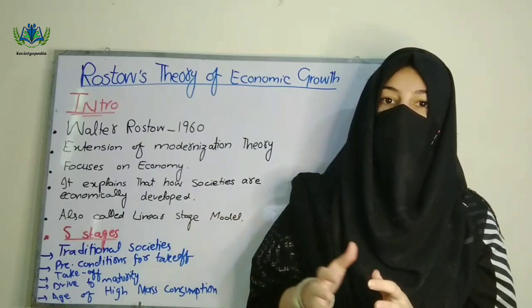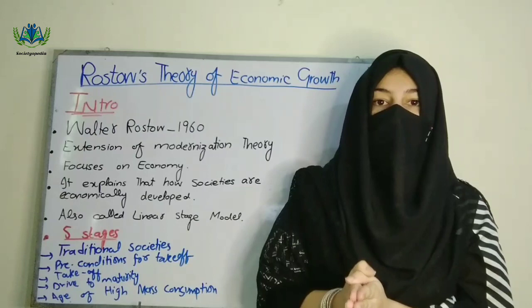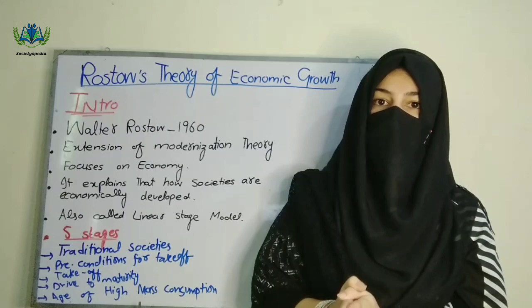The first stage is traditional society, second is preconditions for take-off, third is take-off, fourth is drive to maturity, and fifth is age of high mass consumption. According to Rostow, through these five stages a society becomes economically developed.